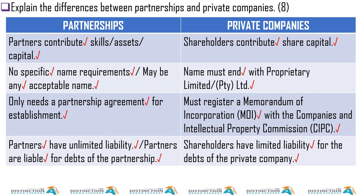A partnership only needs a partnership agreement for establishment. However, a private company will need a memorandum of incorporation with CIPC. Partners have unlimited liability — even if one partner does something without your knowledge, you are all liable. If one of your partners takes a loan and misuses the funds, you are also liable even though you didn't know. When it comes to repossession, they can take your house and your car even though you didn't know your partner did that. That is what we mean by unlimited liability.